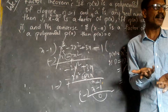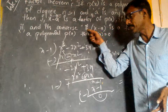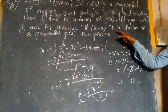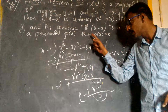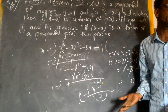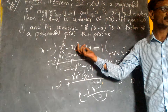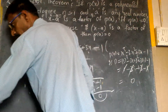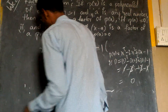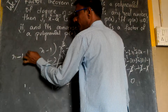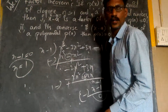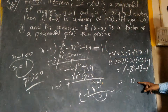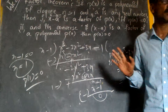So we can say that if x minus a is a factor of p of x, then p of a equals 0. X minus a is a factor of polynomial p of x means p of a must equal 0. This is my p of x, divided by x minus 1. That means 1 is the zero of this polynomial. Setting x minus 1 equal to 0 gives x equal to 1, so p of 1 equals 0.